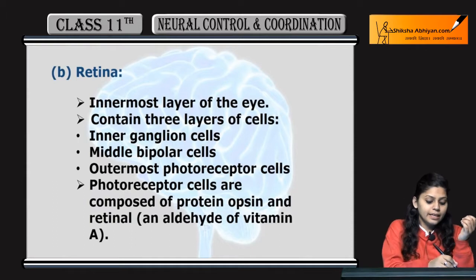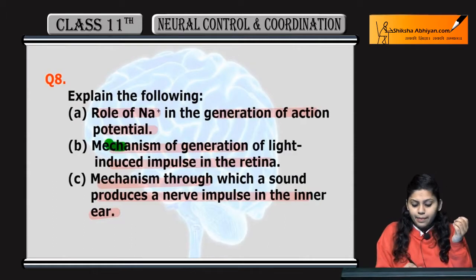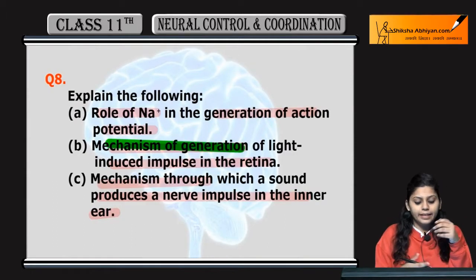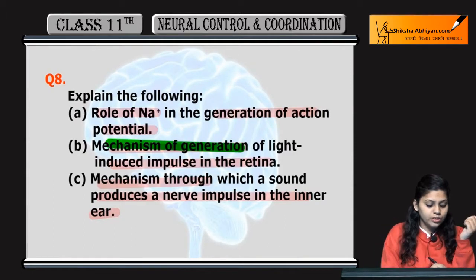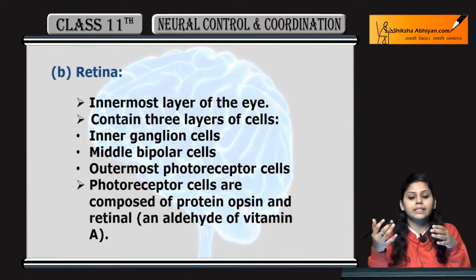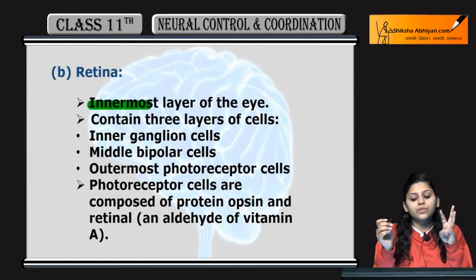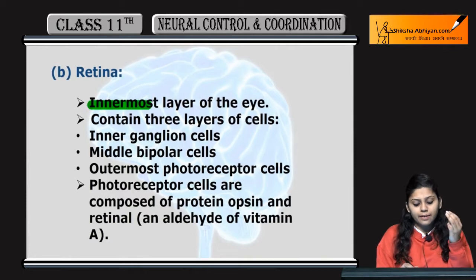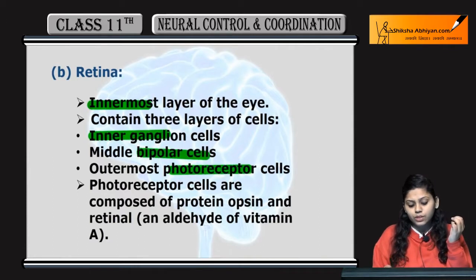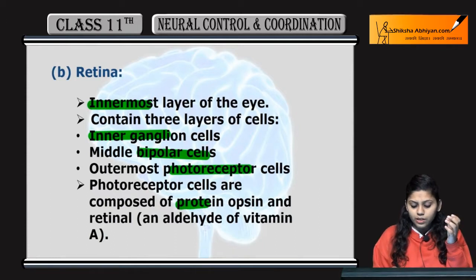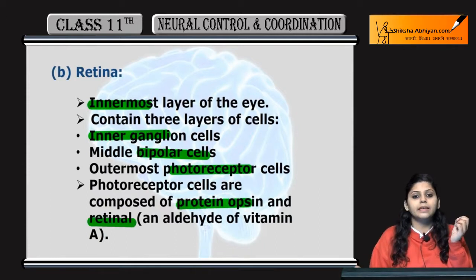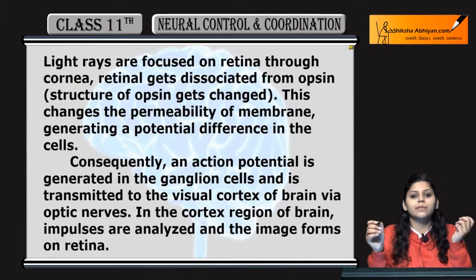Next is the mechanism of generation of light-induced impulses in the retina. The retina is the innermost layer and contains three layers of cells: inner ganglionic cells, bipolar cells, and photoreceptor cells. Photoreceptor cells are composed of the protein opsin and retinal. Retinal is an aldehyde of vitamin A.